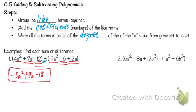Sometimes people do the negative 12 and negative 6 first, but then they're not in standard form. So doing it this way keeps everything in standard form already.